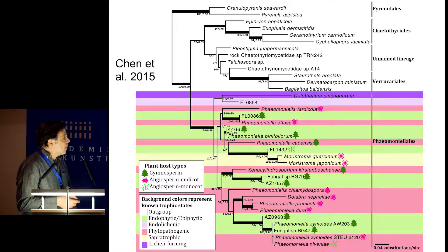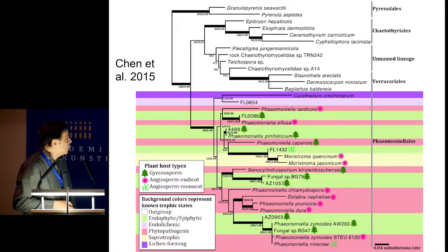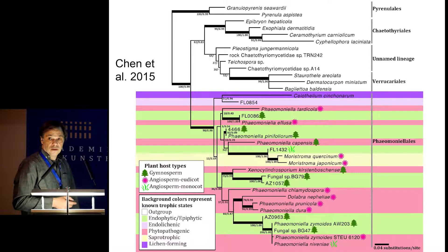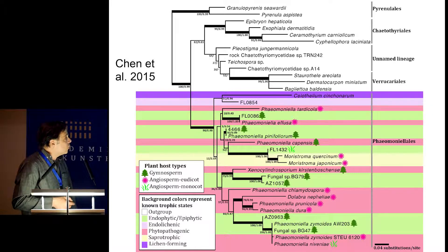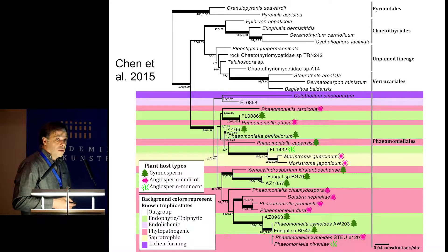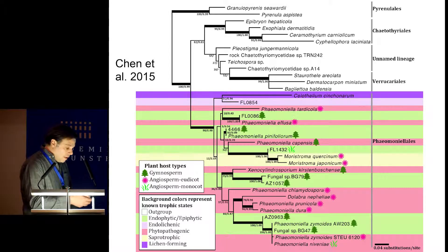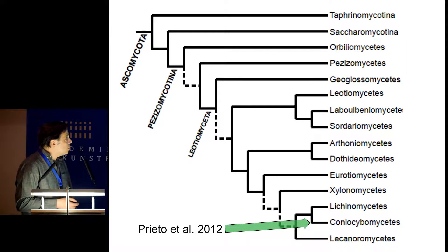This order's evolution is shaped in large part by its endophytic association with gymnosperms. It's a very diverse group trophically: lichen-forming fungi, saprotrophs, phytopathogens, endolichenic, and endophytic fungi — all in this order. It also sheds new light on pathogens like Dolabra on lychee crops.